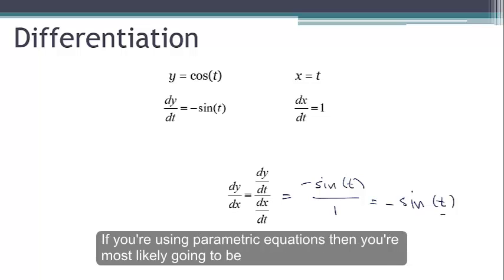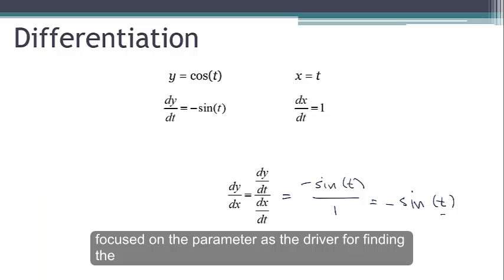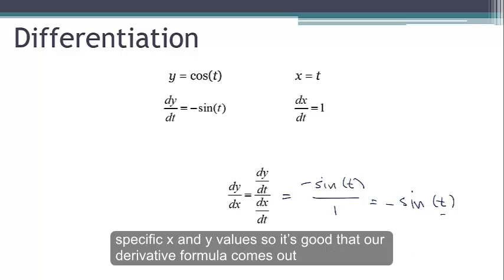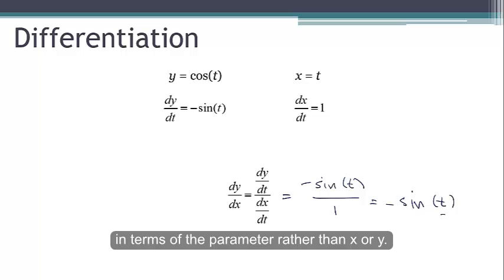Now if you're using parametric equations, then you're most likely going to be focused on the parameter as the driver for finding the coordinates of points. For example, you might want to know the rate of change after three seconds rather than for specific x and y values. So it's good that our derivative formula comes out in terms of the parameter rather than x and y.